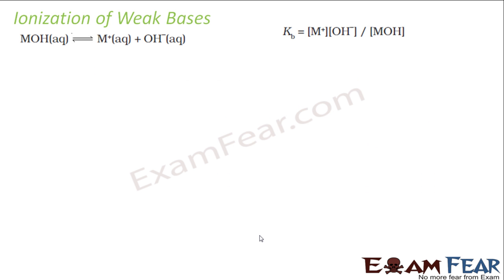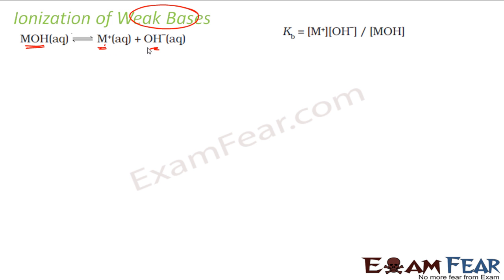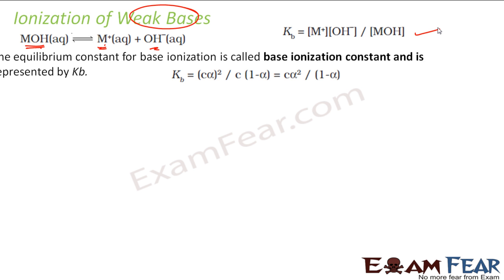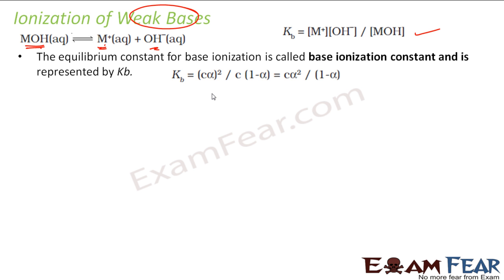We have done ionization of weak acid; now let's do ionization of weak base. We have some weak base MOH — it dissociates into M⁺ and OH⁻ ions. The KB here will be [M⁺][OH⁻] / [MOH]. It is a KB similar to the equilibrium constant we had, and this value is nothing but Cα² / (1 − α).